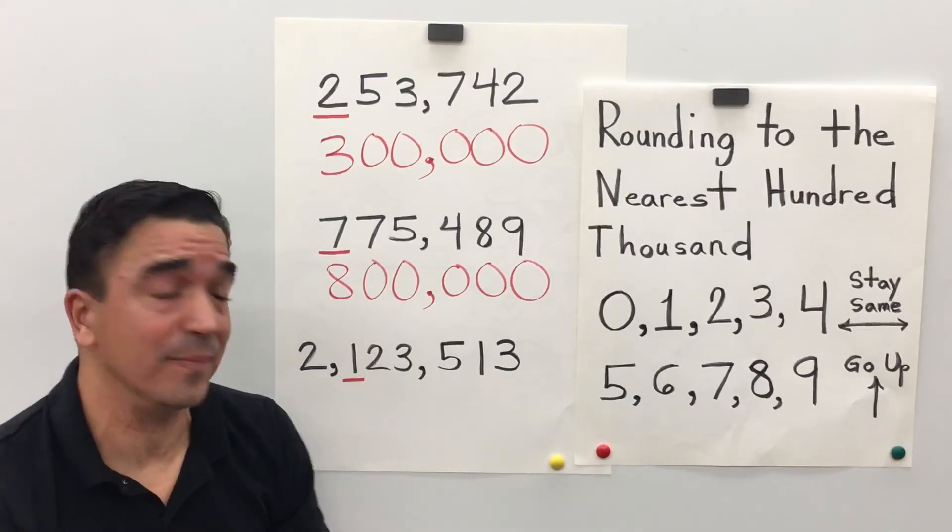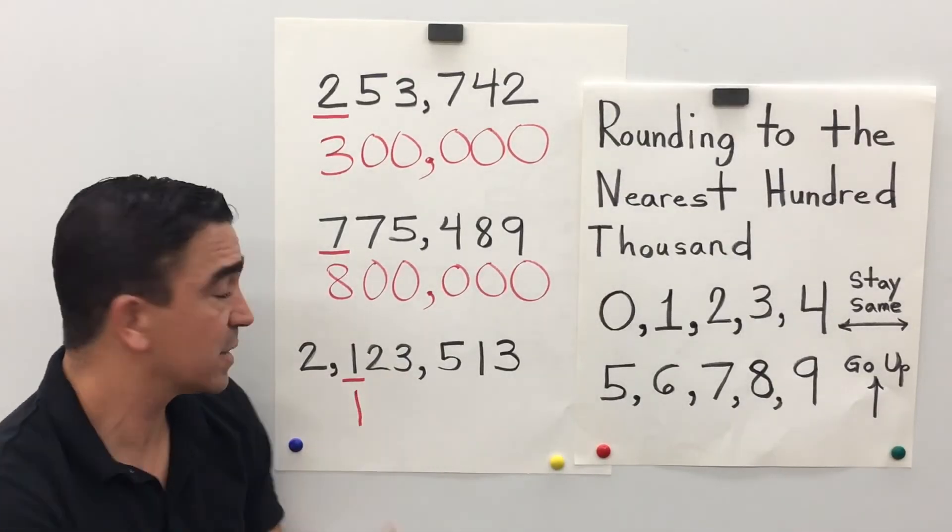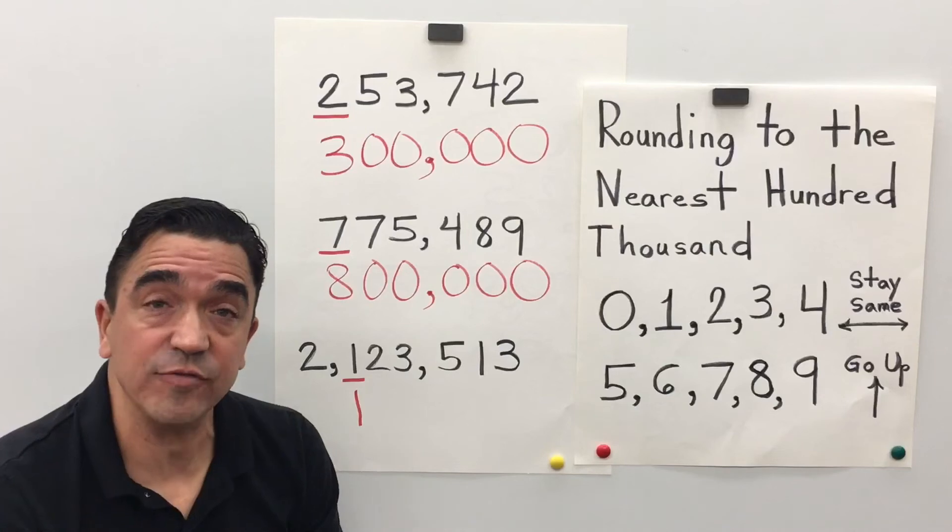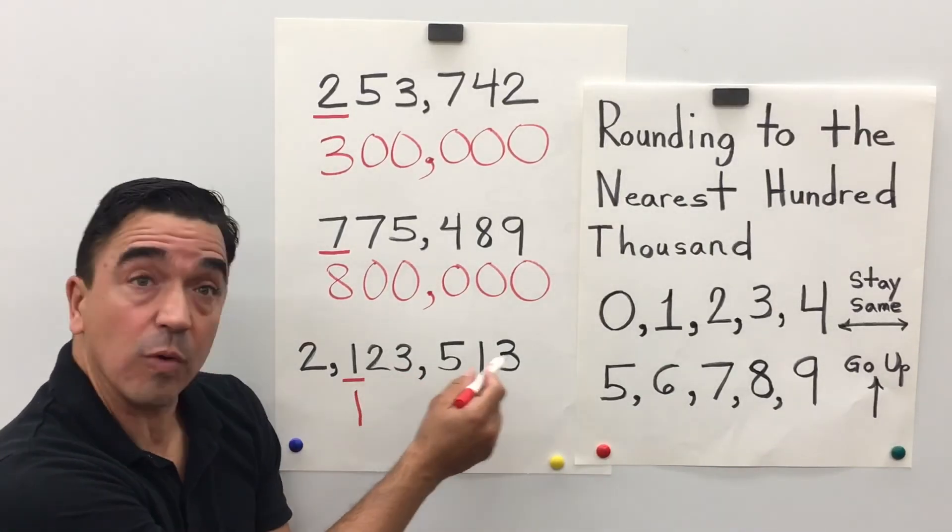The 2 is going to tell it to stay the same. All the digits after become zeros: 1, 2, 3, 4, 5.